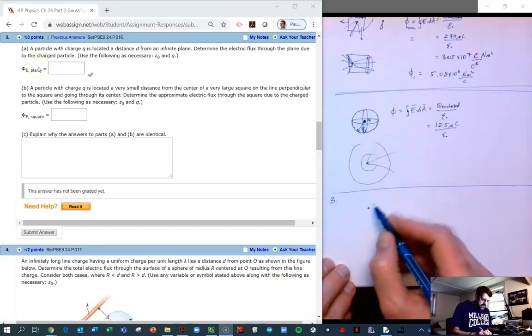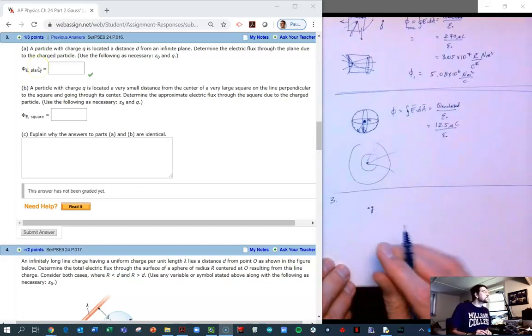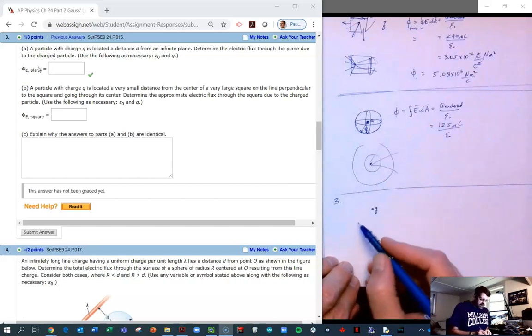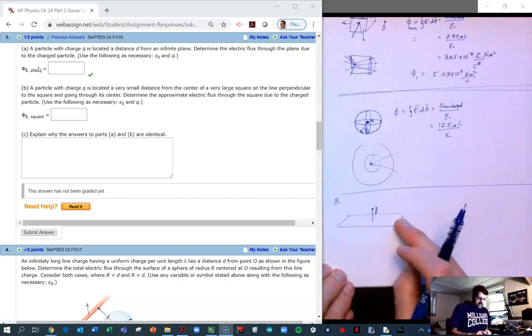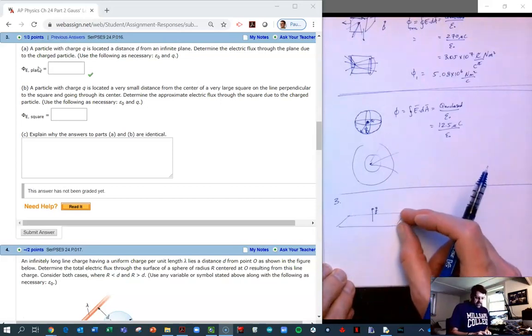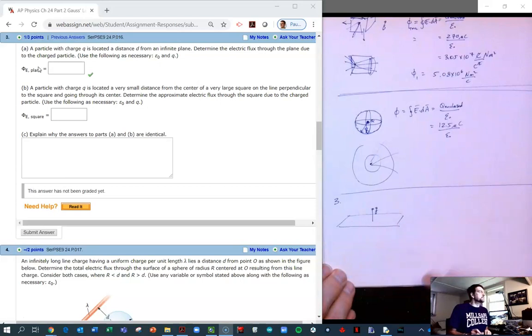Particle Q has been placed some distance D from an infinite plane. Infinite planes are odd because they're infinite, which means they extend forever in all directions. So the question is, what is the electric flux through the plane due to the charged particle?